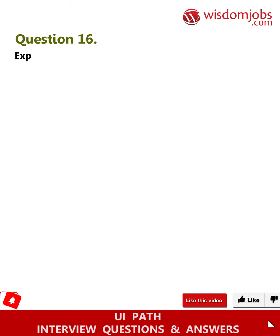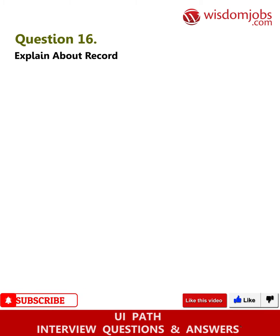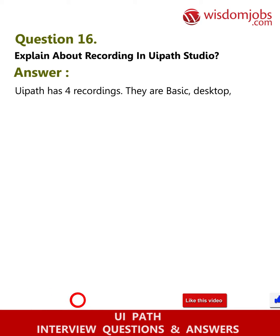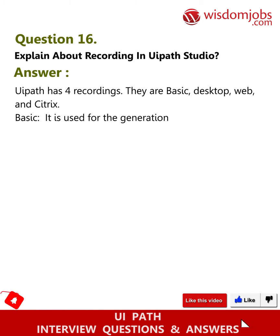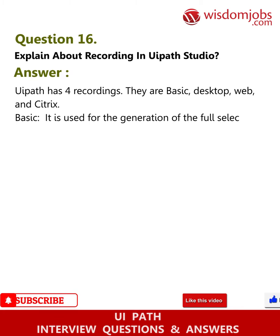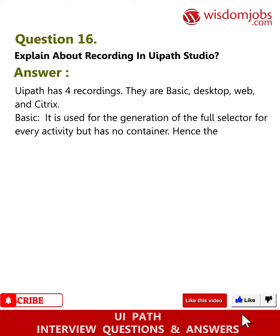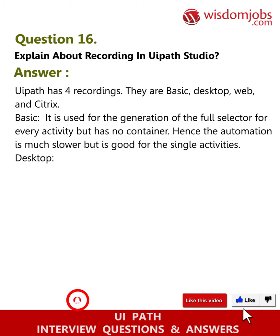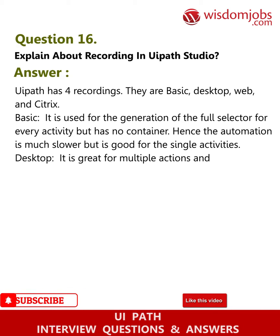Question 16: Explain about recording in UiPath. Answer: UiPath has four recordings: Basic, Desktop, Web, and Citrix. Basic is used for the generation of the full selector for every activity but has no container, hence the automation is much slower, but it is good for single activities. Desktop is great for multiple actions and desktop apps — it is much faster than Basic.